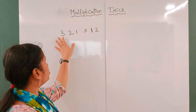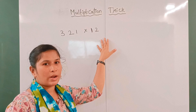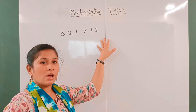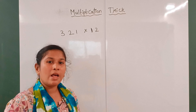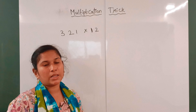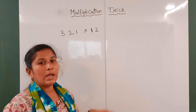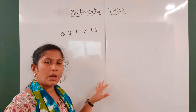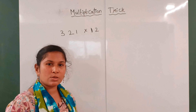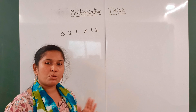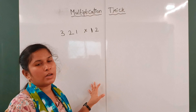I will give you the multiplication number 321 into 12. I will show you step-wise — I will show you the lines in the Japanese method. I will use this trick for a 3-digit number.